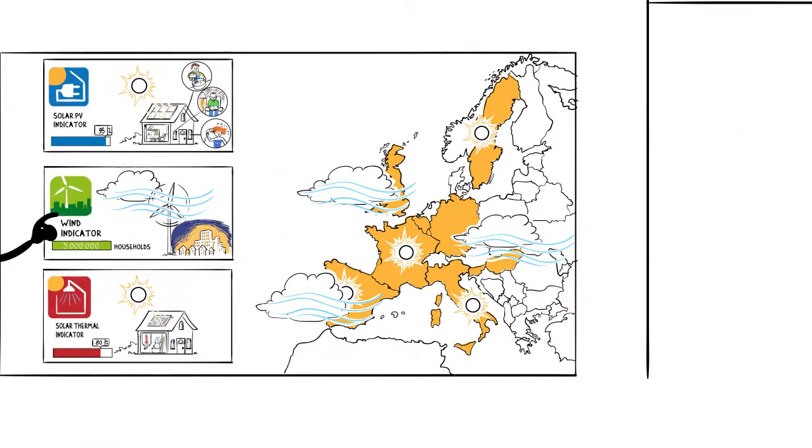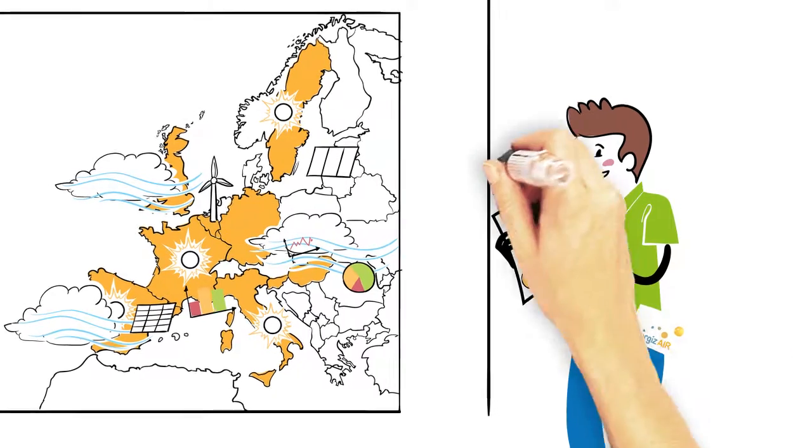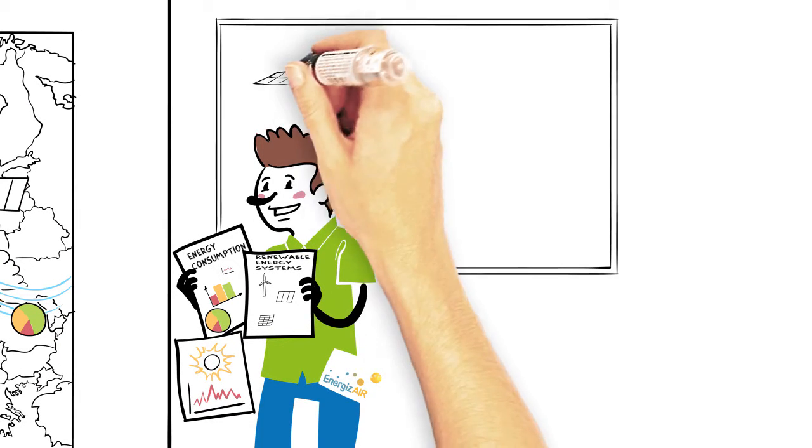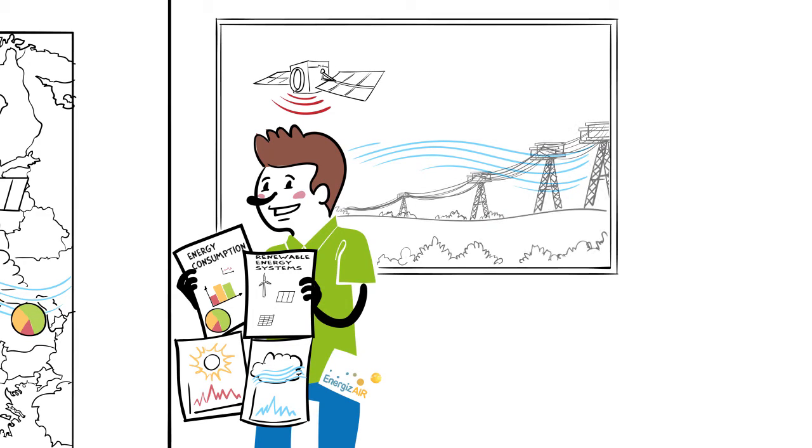To produce these indicators, project partners have been gathering statistical data about energy consumption and typical renewable energy systems in each country. They link this information with solar insulation data provided by satellites and real wind production data supplied by network operators.